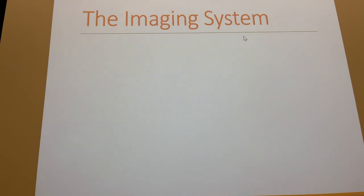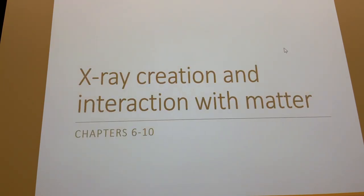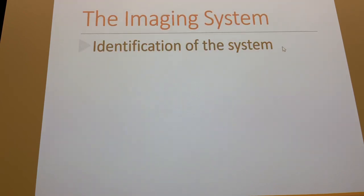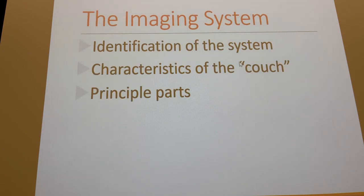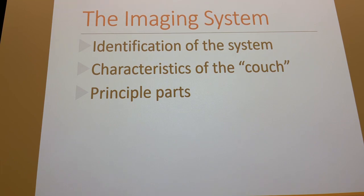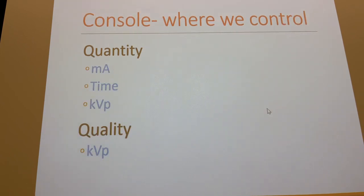Just to review what we talked about on Friday of last week: we got into the imaging system, talked about the identification of the imaging system, the tabletop and what we had to have in the tabletop. We talked about the three principal parts being the X-ray tube, the high voltage generation system, and the console — the console being where we affect the quantity and quality of the X-ray beam.